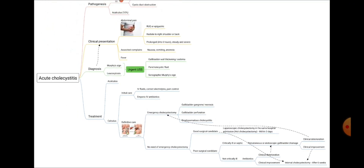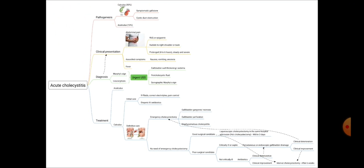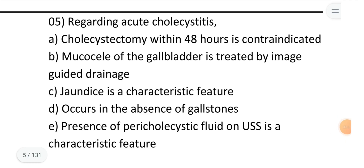This knowledge is essential for answering MCQ questions. Here is one MCQ on acute cholecystitis — a true/false type. Statement A: cholecystectomy within 48 hours is contraindicated. This is false, because we can perform hot cholecystectomy within three days, and if there are indications for emergency cholecystectomy such as emphysematous cholecystitis, gallbladder gangrene, or perforation, we can operate even sooner. So A is false.